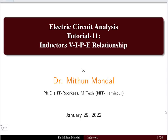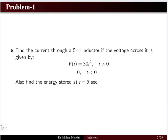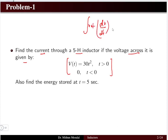In Tutorial 11, we discuss problems based on inductors: voltage, current, power, and energy relationships. The problem involves finding the current through a 5-henry inductor given a voltage relationship. When dealing with AC circuits, especially inductors and capacitors, the voltage-current relationship involves integral and differential equations. In the time domain we use dv/dt or di/dt. In the frequency domain, these become algebraic equations.